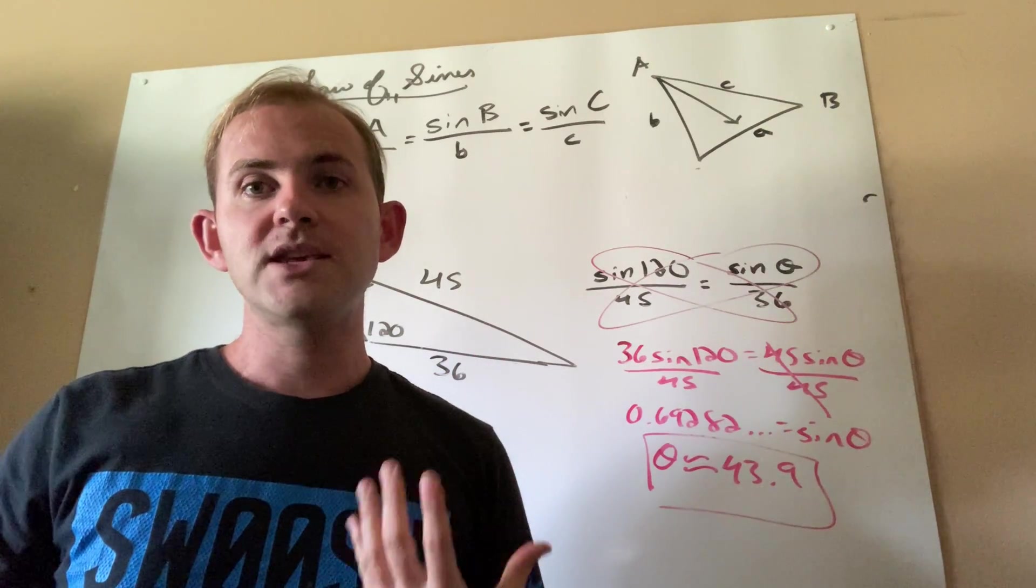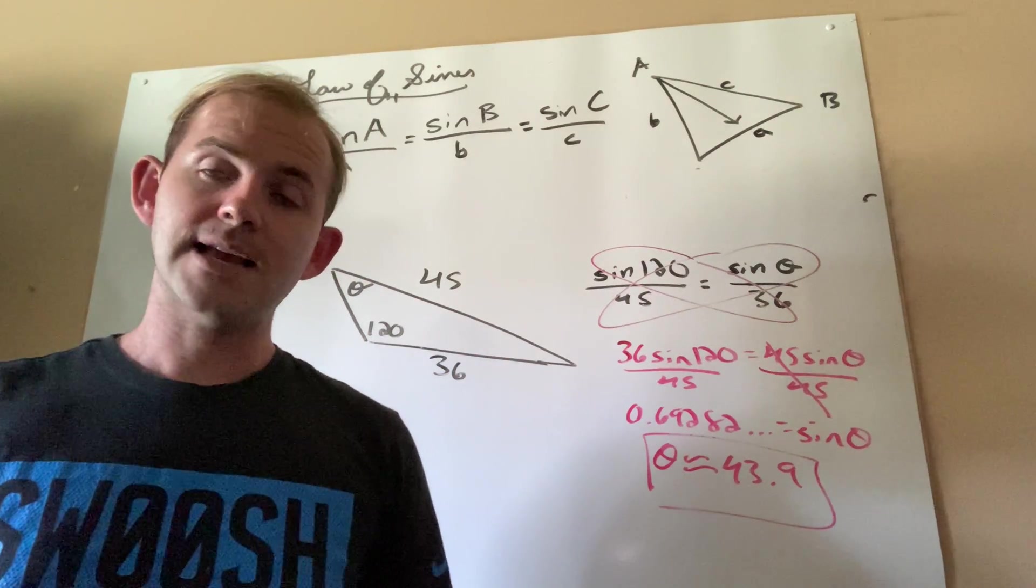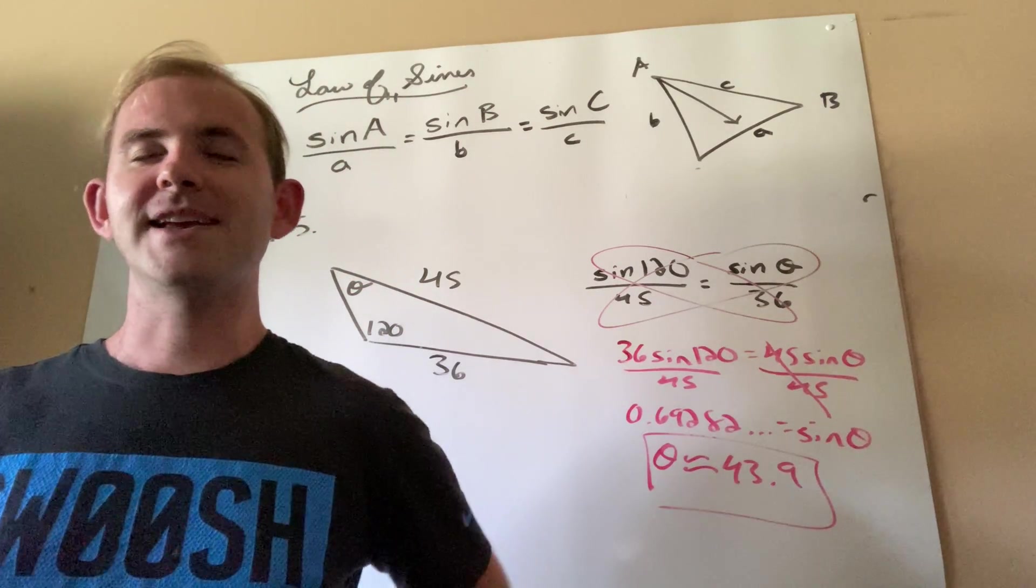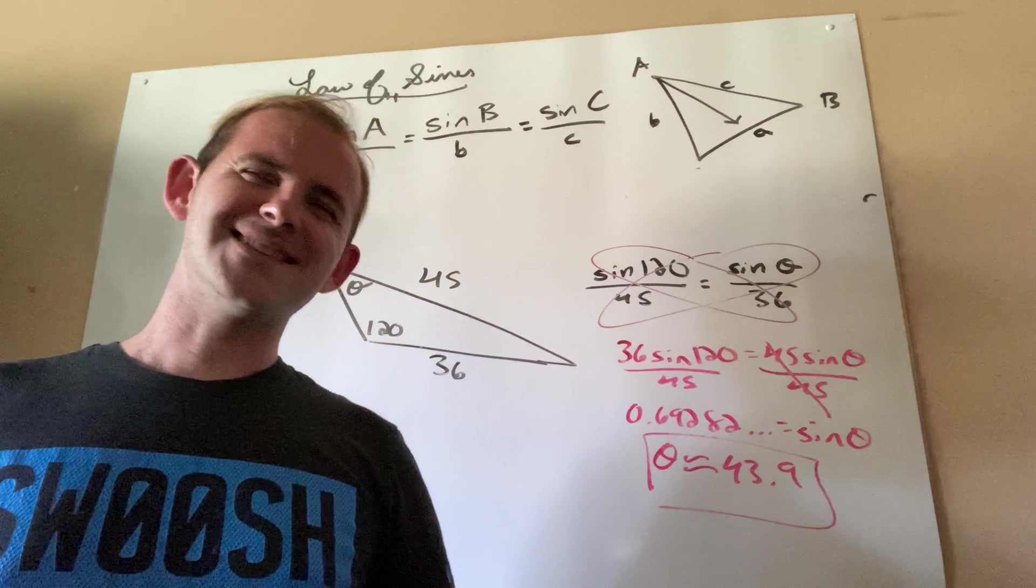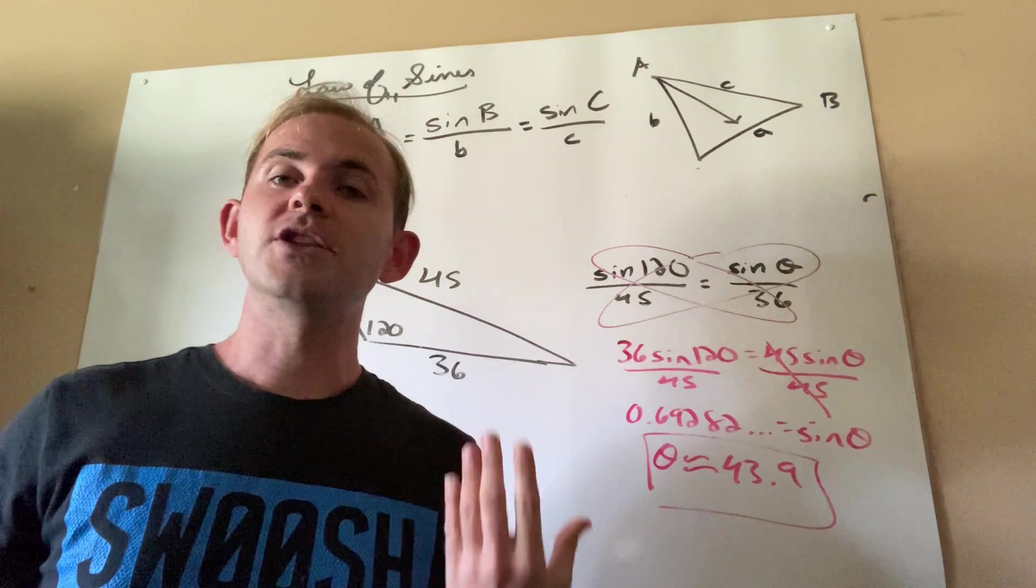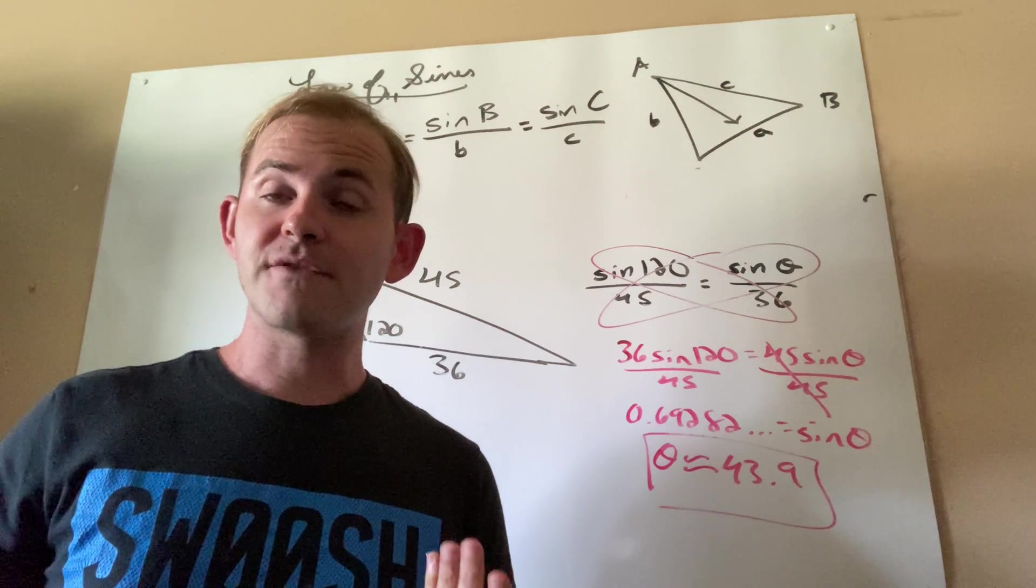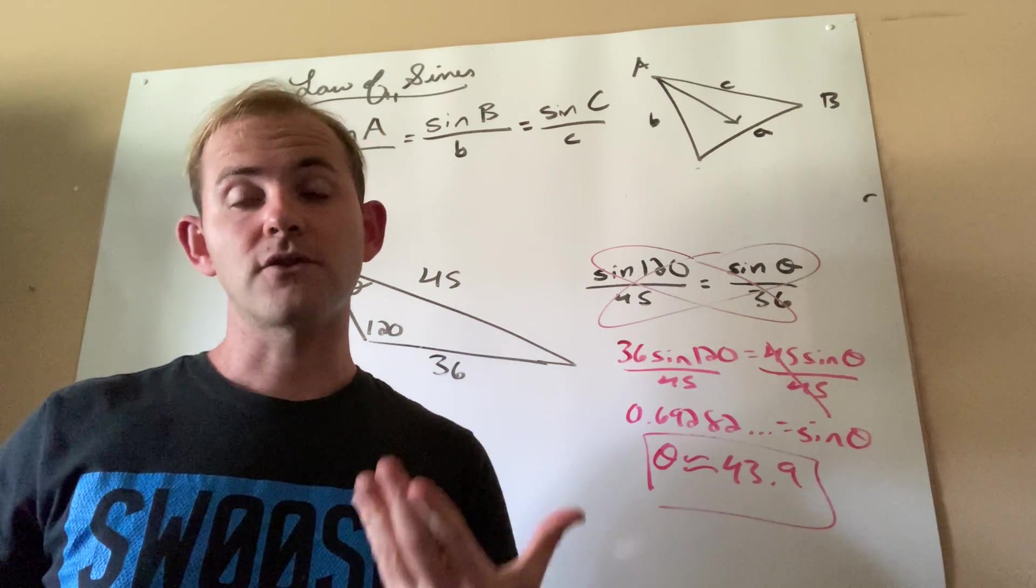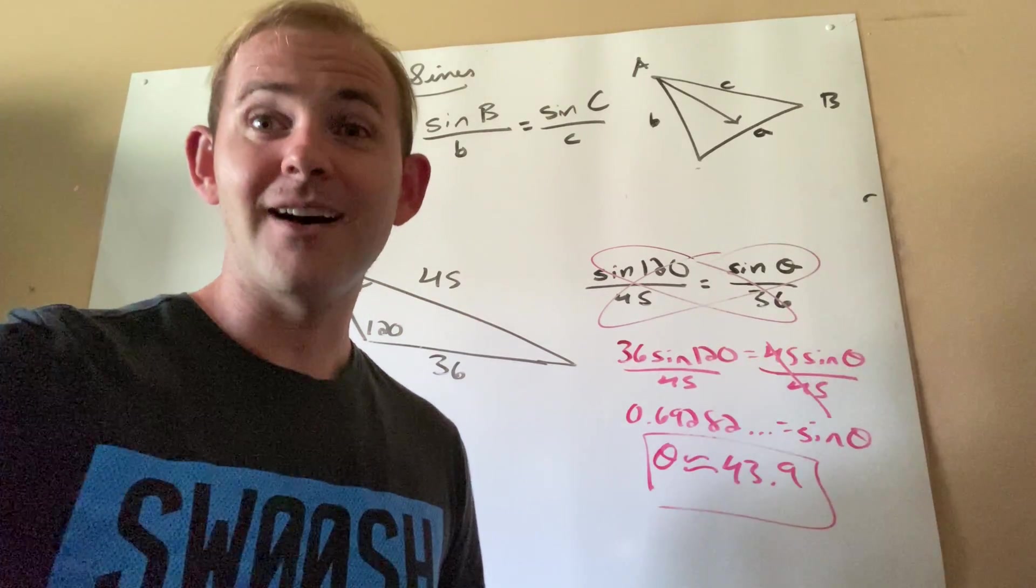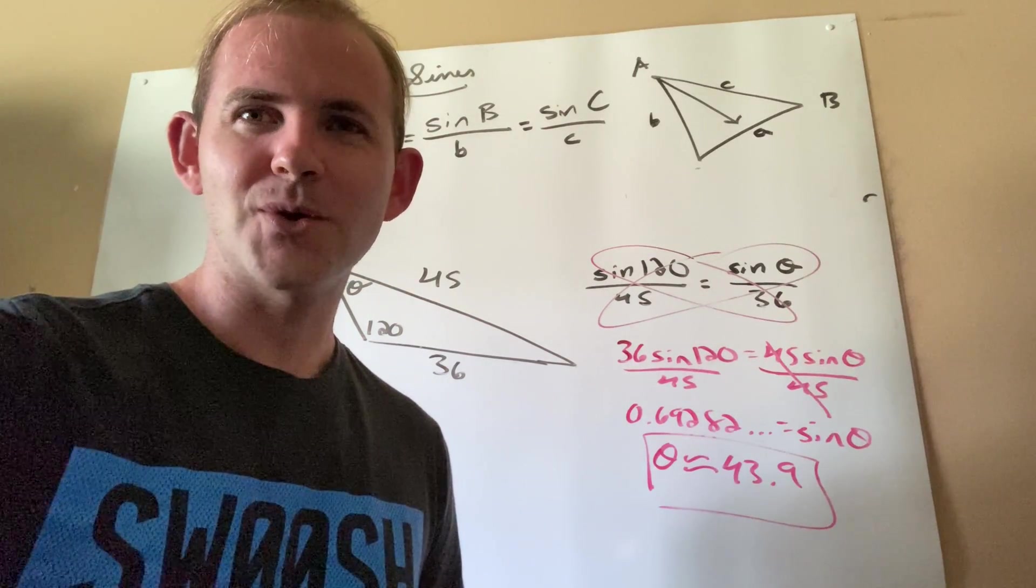The reason we use the law of sines and the reason it's helpful is that it helps compensate for the weaknesses of regular trigonometry. Normally, in the past, we've always restricted ourselves to right triangles. With the law of sines, not only can we find unknown sides and unknown angles for right triangles, but we can also find them for acute triangles and obtuse triangles as well.